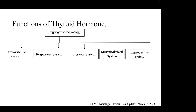In addition, there is surfactant production as well. In the nervous system, it helps in brain maturation by axon formation and dendritic growth. In the musculoskeletal system, it deals with the development of muscle fibers along with bone growth by induction of osteoblasts and helping in bone turnover. In the reproductive system, the thyroid hormone aids in fertility, ovulation, and menstruation.